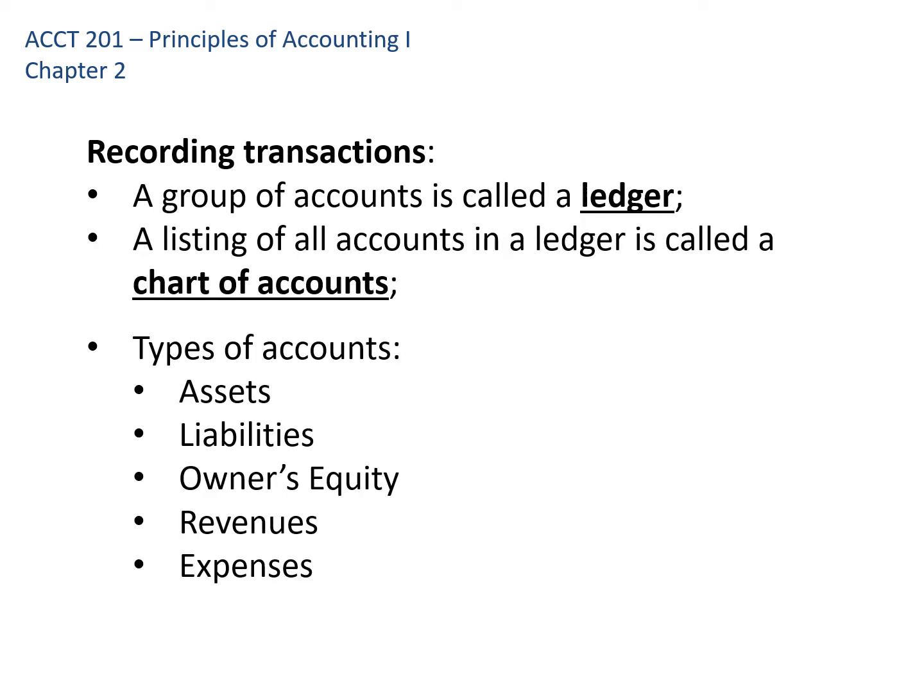A group of accounts is called a ledger. Think of it like a three-ring binder where each page in the binder is a different account. We would take that binder — the general ledger — off the shelf, flip to the relevant page, and record increases and decreases. At the very beginning of that binder we'd have a listing of all the accounts the company uses, which changes over time. That listing is called a chart of accounts.